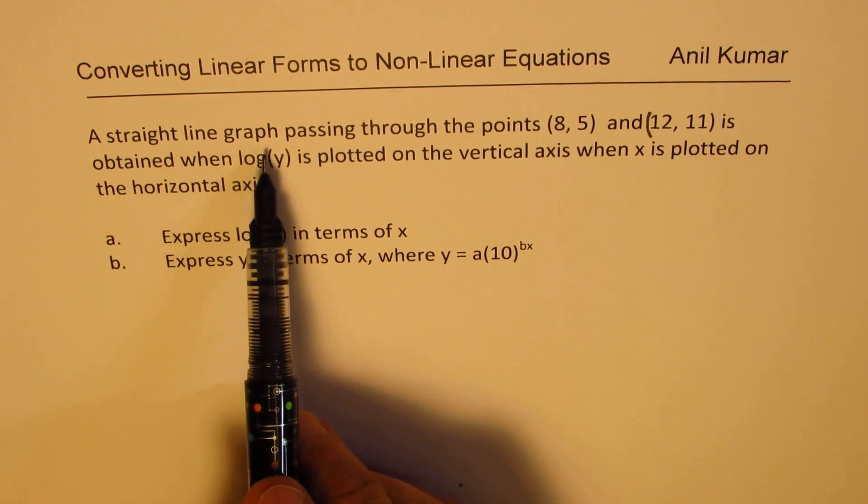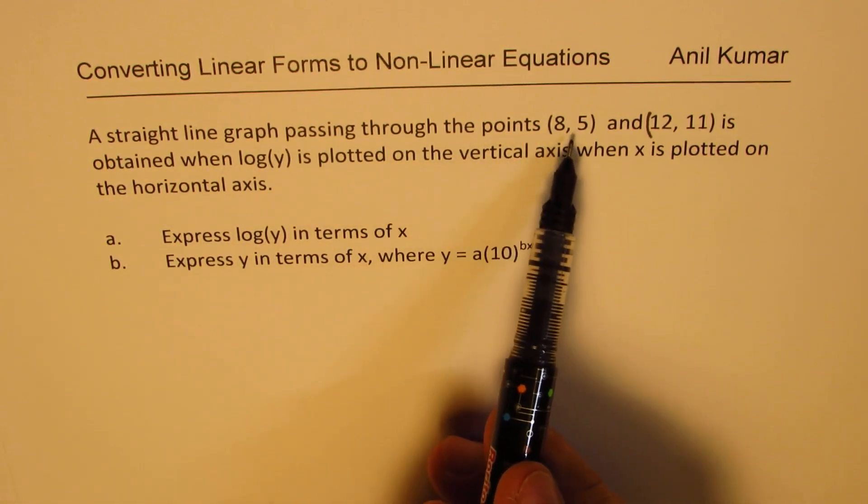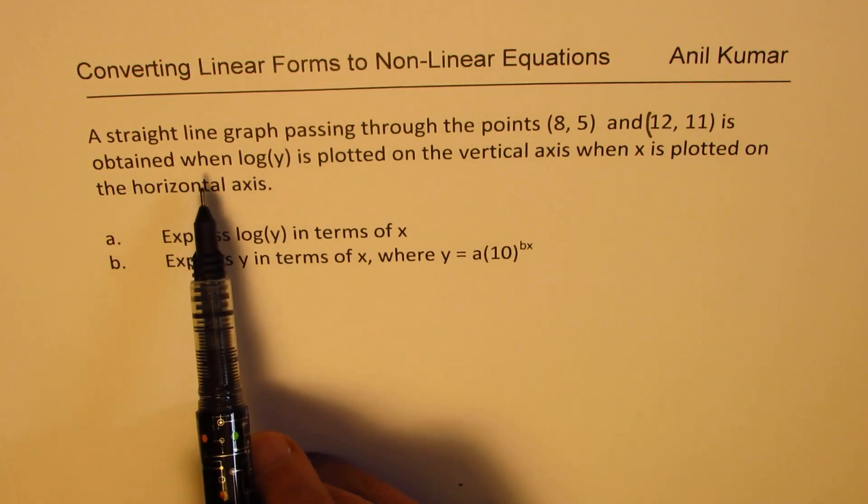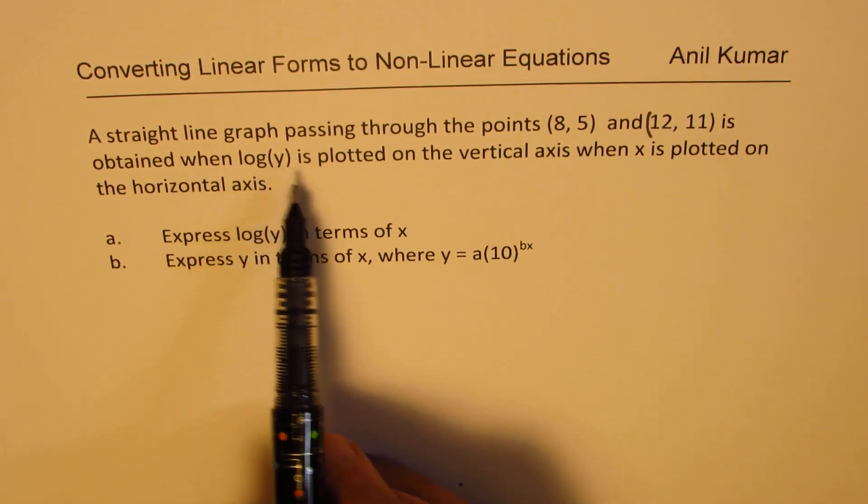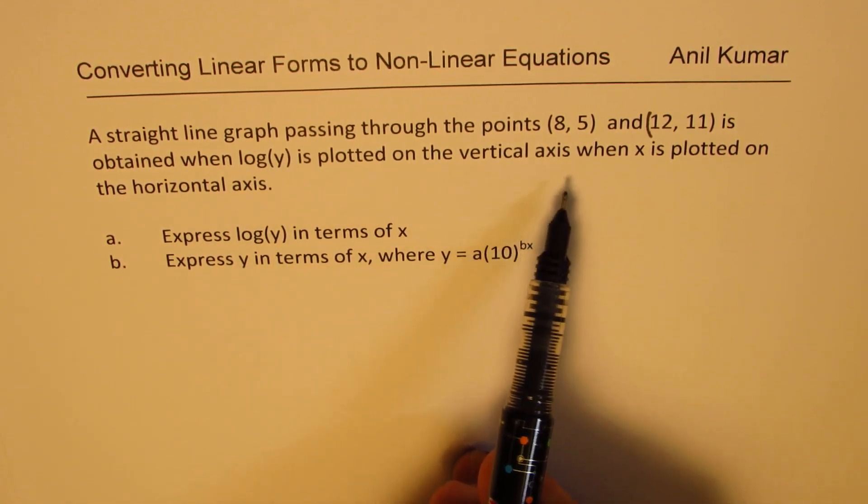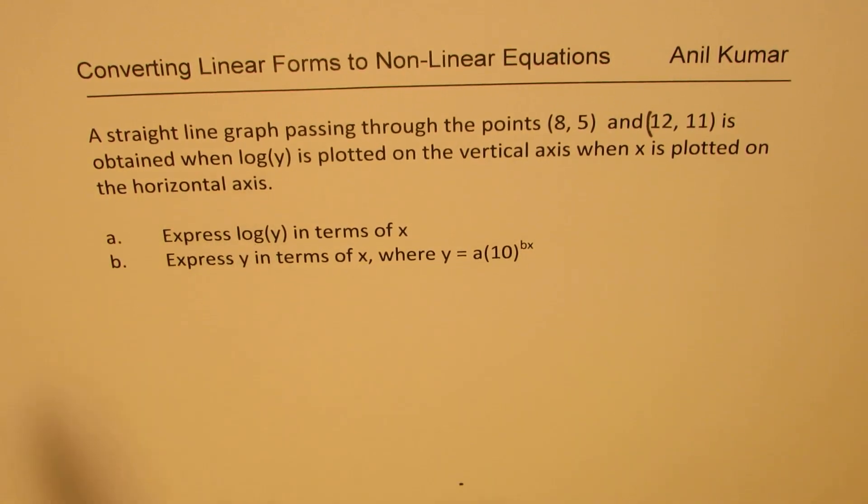A straight line graph passing through the points (8, 5) and (12, 11) is obtained when log(y) is plotted on the vertical axis and x is plotted on the horizontal axis.